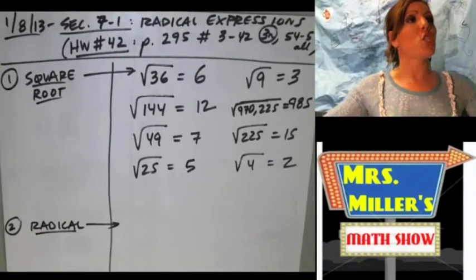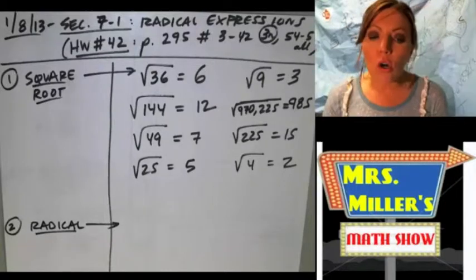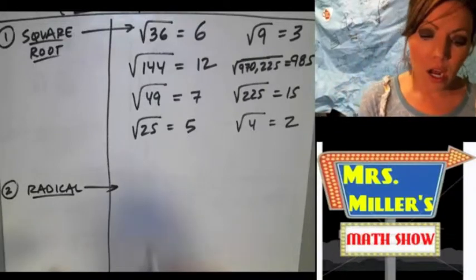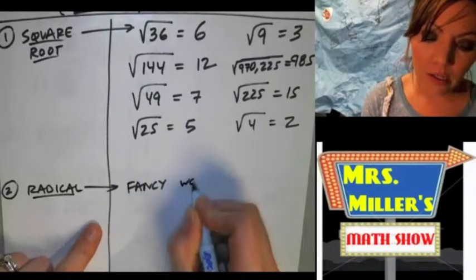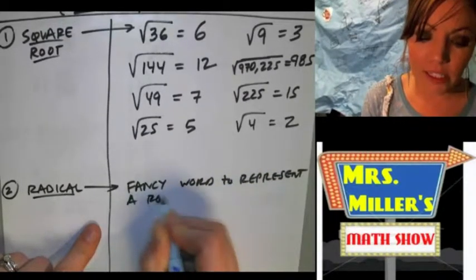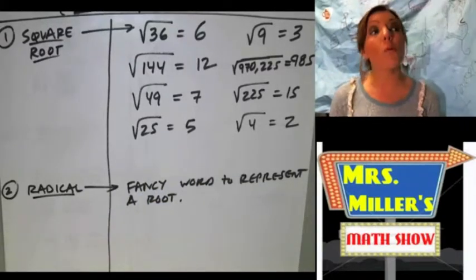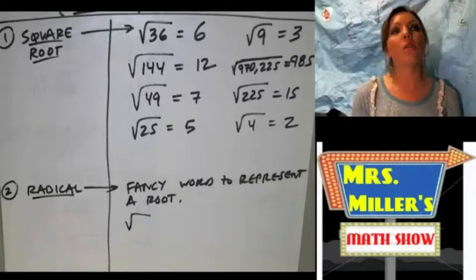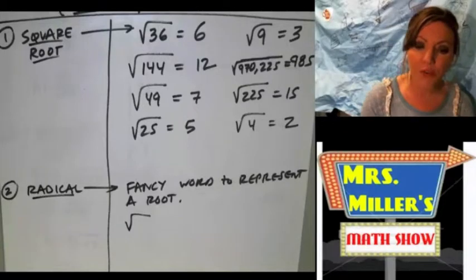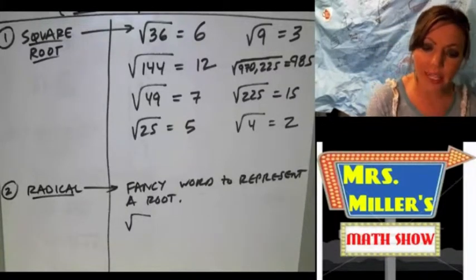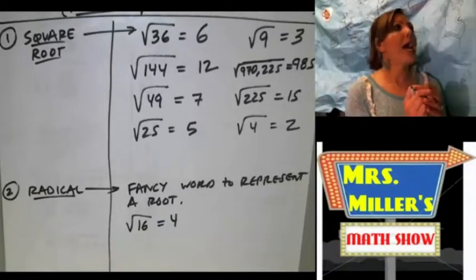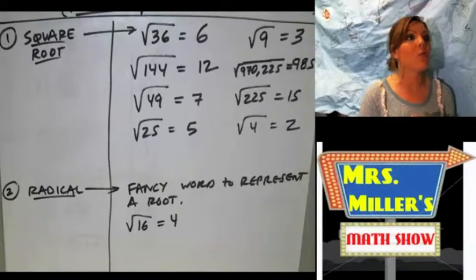So we all know what square roots are. Now, radical is a fancy word for root, a root of any kind. So it's a fancy word to represent a root. A square root is a number that you look for that you can multiply by itself twice to get that number. So like the square root of 16 is four.